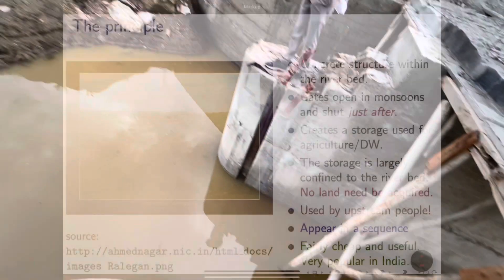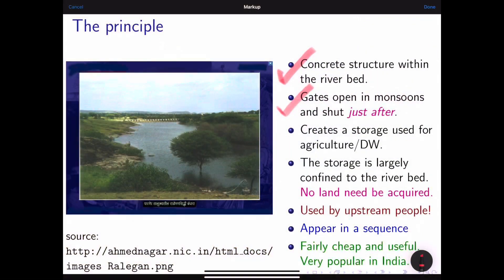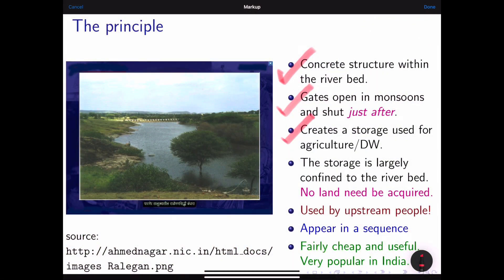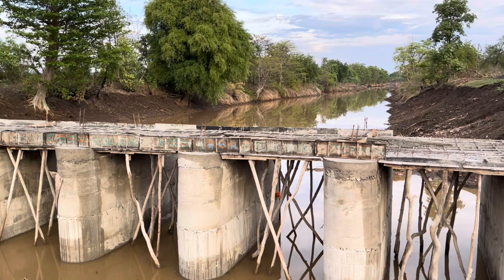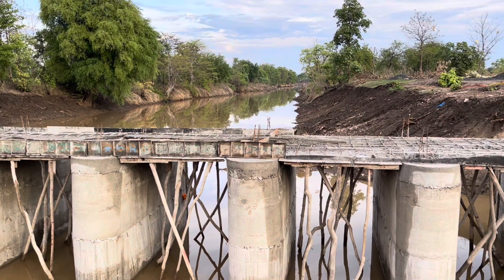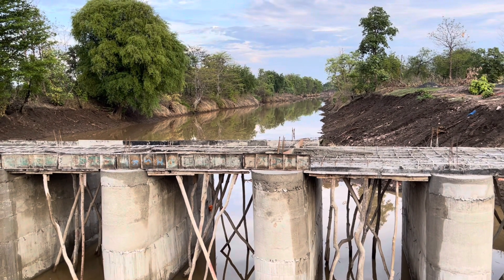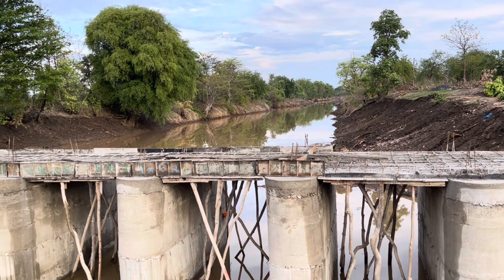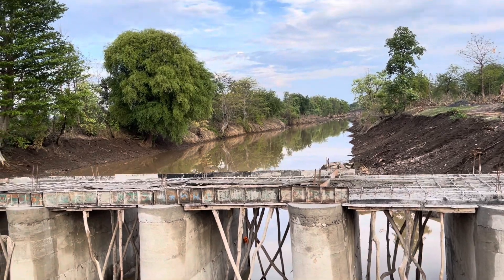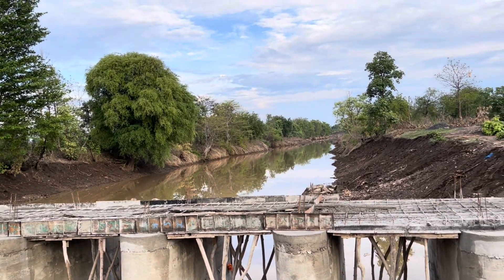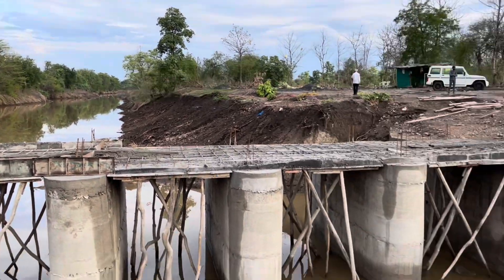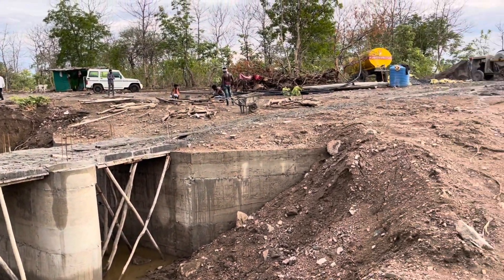It is basically a water storage reservoir. As you can see, even before the construction of the KT Ware is completed, water is already being stored — the rains have started and water has trickled in.